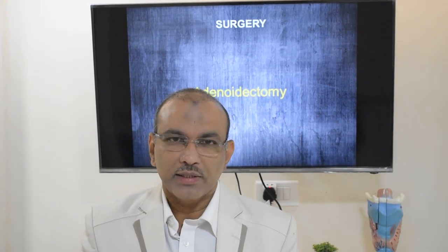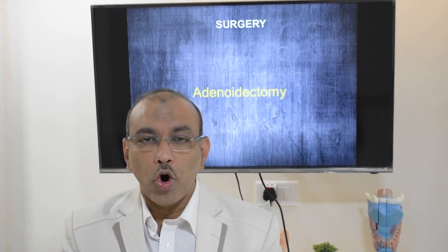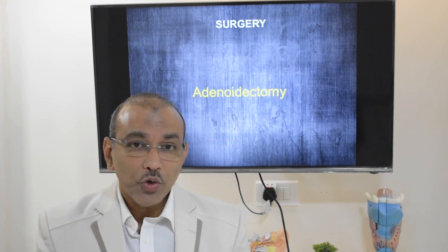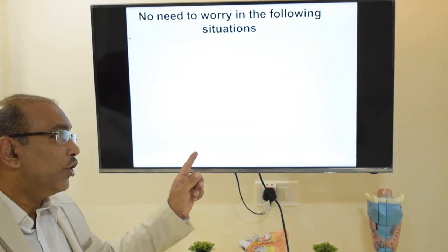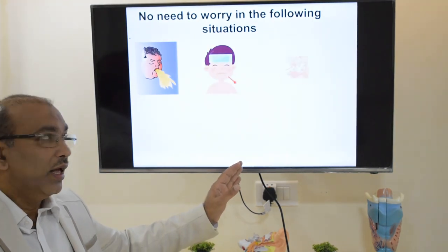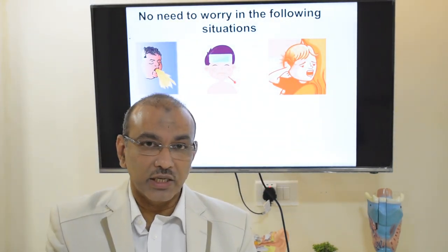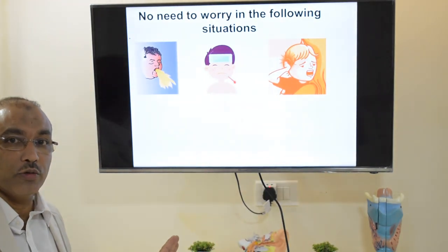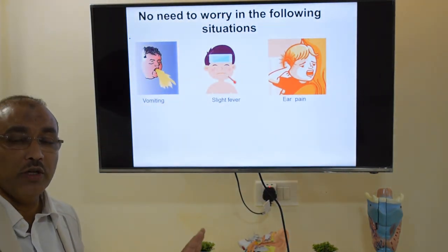Once surgery is over, the child goes to the recovery room for 15–30 minutes, then back to the ward. When you receive the child, he will be very irritable and may cry continuously. The child may vomit, have a slight temperature, complain of ear pain (even without ear surgery), and there may be a change of voice. Do not worry — all these minor complaints will be taken care of.